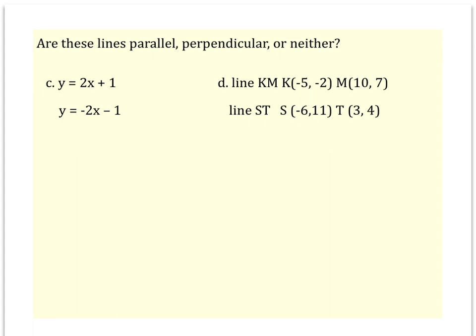In example C, y equals 2x plus 1 and y equals negative 2x minus 1. It's important to remember, when talking about slope, you look at the number that's in front of the x, or the number that's multiplying the x. So the first line has a slope of positive 2, the second line has a slope of negative 2.